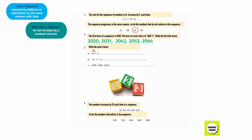For the sequence 10, 7, 4: the difference between 7 and 10 is negative 3, and the difference between 4 and 7 is negative 3. So we subtract 3 from 4 to get 1, then 1 minus 3 is minus 2, minus 2 minus 3 is minus 5, and minus 5 minus 3 is minus 8.